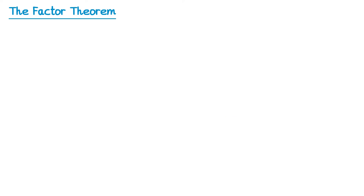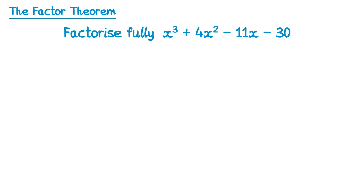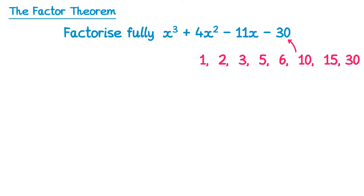The factor theorem is especially useful when factorising polynomials. If we substitute a number into a cubic and get 0, we've found a factor. In your exam you'll probably be given one of the factors, but if not, look at the factors of the constant term — in this case 30: 1, 2, 3, 5, 6, 10, 15, 30 and their negatives. These are the numbers to try. I'll use f of 3.